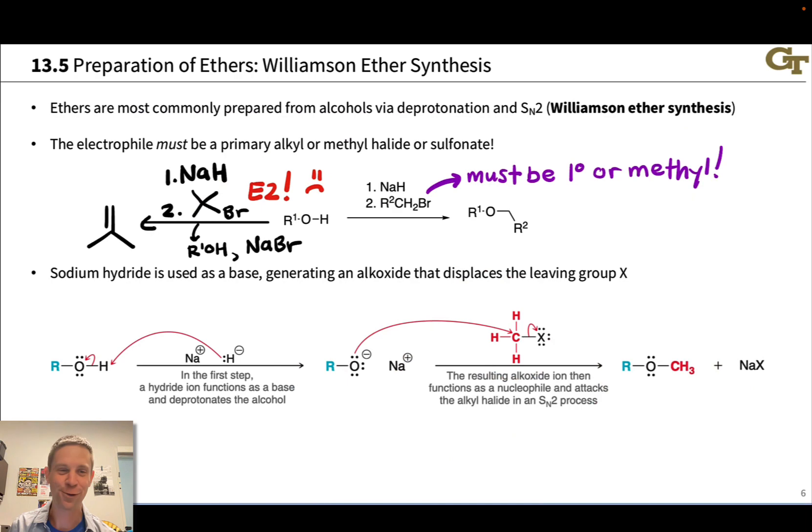It's also important to note that we cannot make bonds to sp2 or sp hybridized carbons using the Williamson method. It's only appropriate for the synthesis of alkyl ethers. In fact, ethers with a CH2 group linked to the oxygen due to this SN2 mechanism.